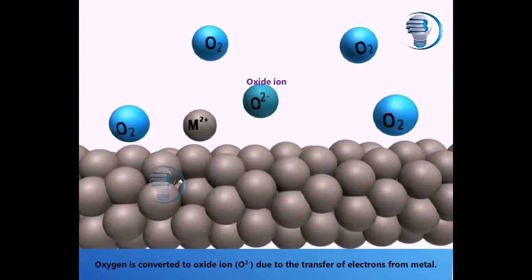Oxygen is converted to oxide ion (O²⁻) due to the transfer of electrons from the metal.